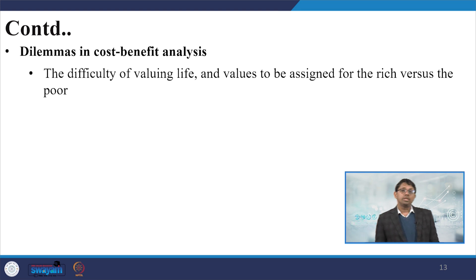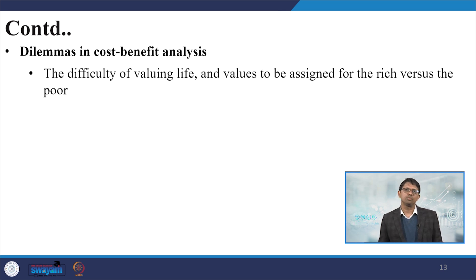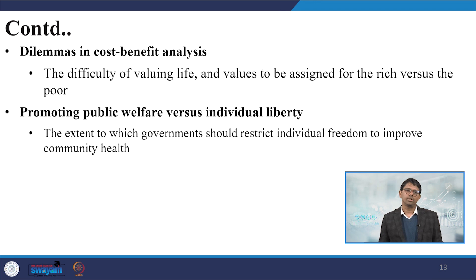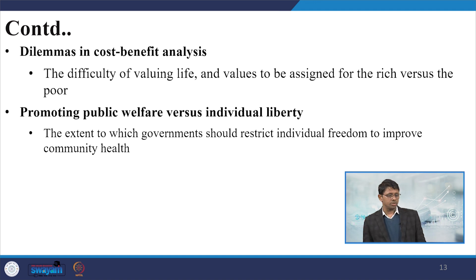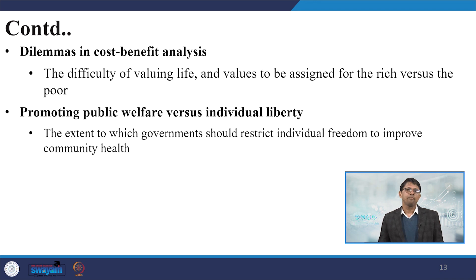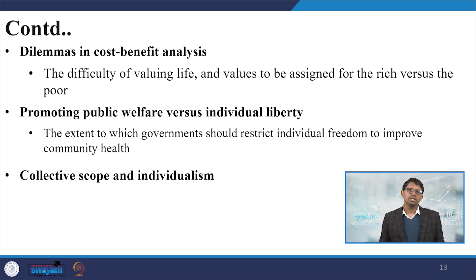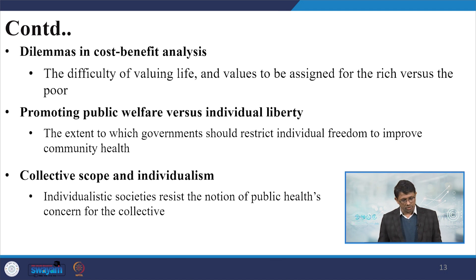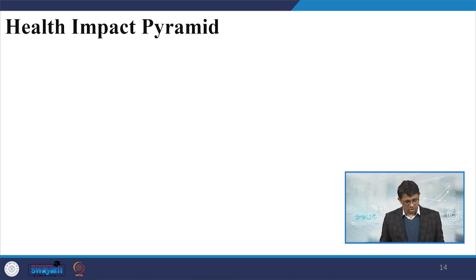There are dilemmas in cost-benefit analysis, such as the difficulty of valuing life and the values to be assigned for the rich versus the poor — touching on equality, equity and inequity as discussed in previous weeks. Promoting public welfare versus individual liberty is another conflicting dilemma. The extent to which government should restrict individual freedom to improve community health is important. In individualistic societies, there is also resistance to the notion of public health concerns for collective action.